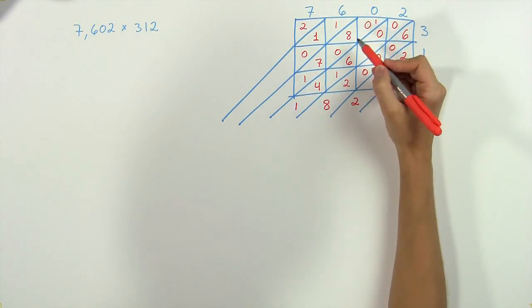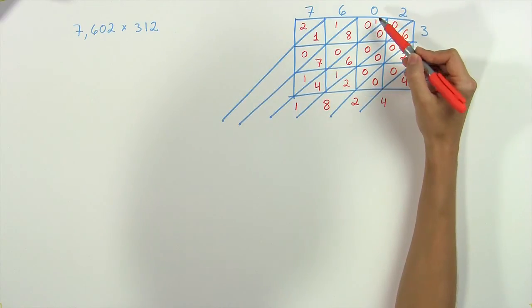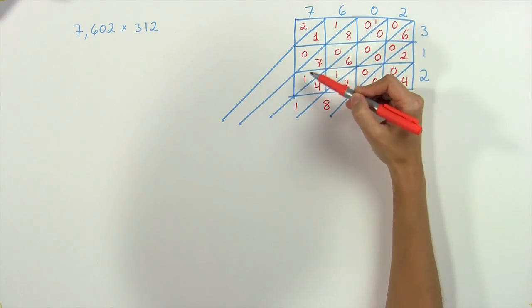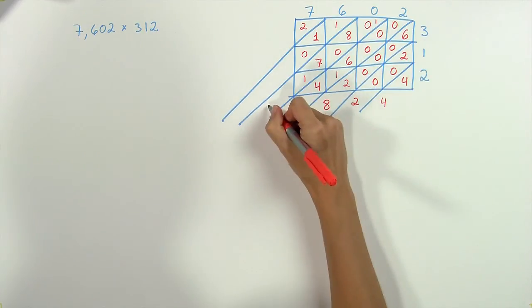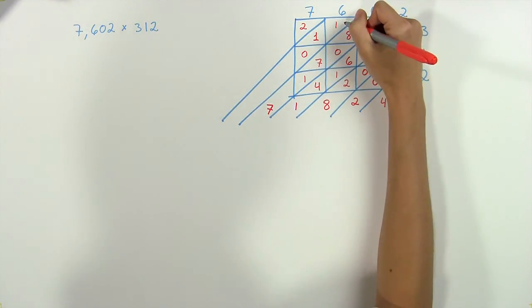Now we add up the next line along with this one at the top. Ignoring the zeros, we have one plus eight plus seven plus one, which is seventeen. So, again, we write the seven at the bottom and carry the one to the top of the next line.